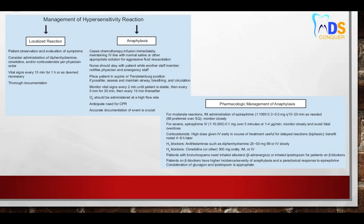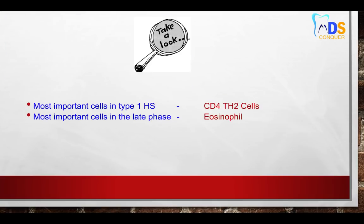Regarding treatment options for hypersensitivity: maintain ABCD — airway, breathing, circulation, disability — and perform CPR if necessary. The key pharmacological point: for a moderate reaction, intramuscular injection of epinephrine 1:1000, 0.3 to 0.5 milligrams is a star MCQ. First and second lines of treatment, including corticosteroids, are commonly asked.